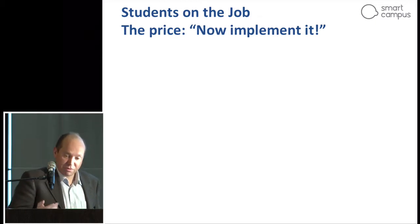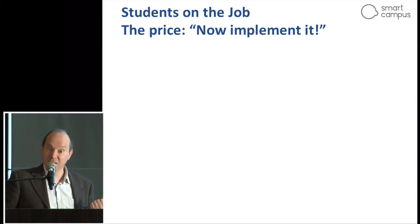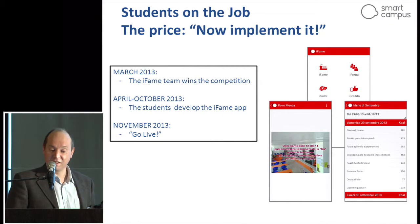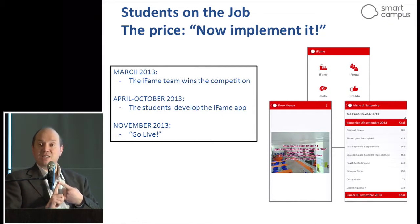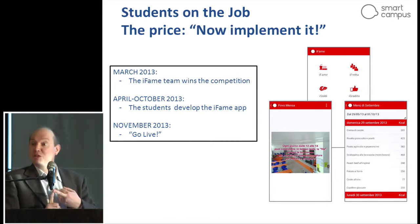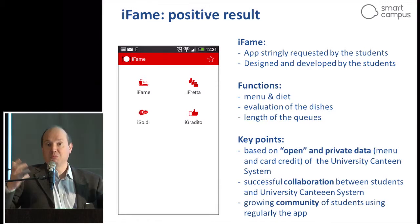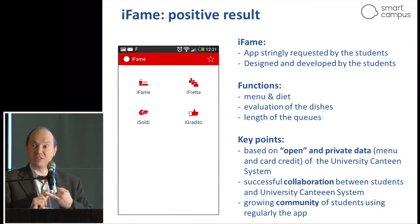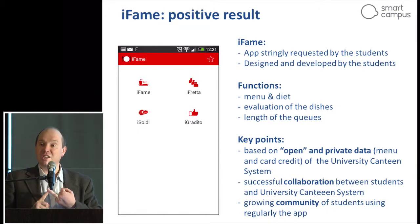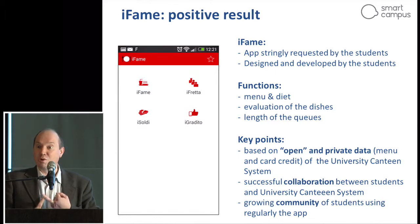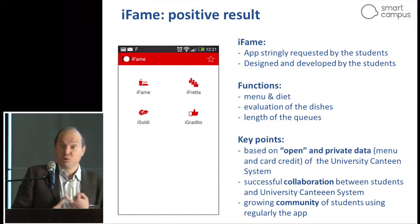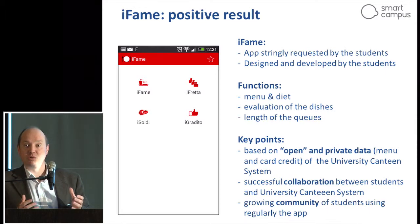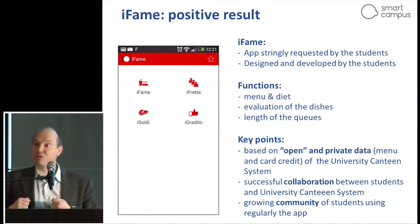The prize was: implement it. They did so. This service has been live since November last year, and I believe this is a very positive result — not only because the service is useful, but also because it is based on open and private data provided by the university's canteen management system. We have not only the menus, which are open data, but also the current credit on students' cards. The university opened private data to enable this service. There was real collaboration between students and the university, including allowing students to critique the quality of food — which was not easy to negotiate — and convincing students that this is a community to help improve food quality and help friends find food that suits their desires. There is a growing community of students using the app.